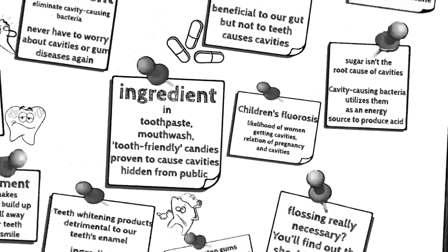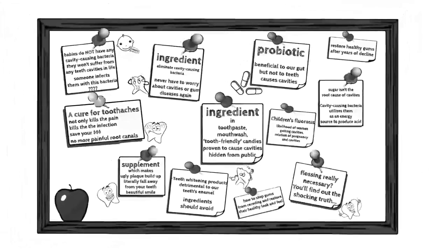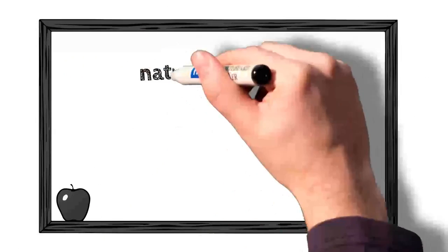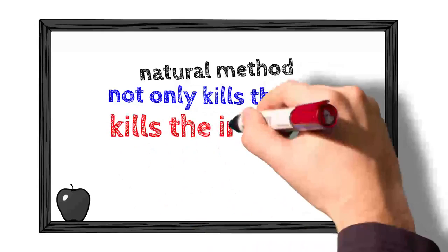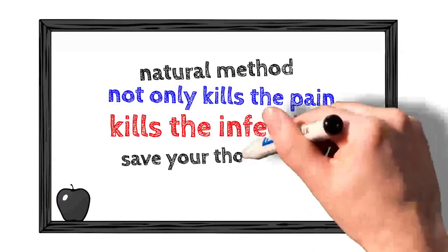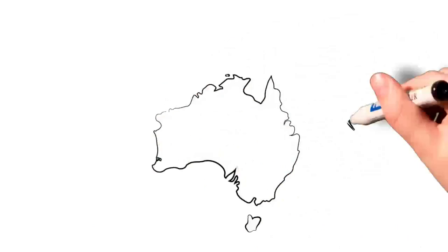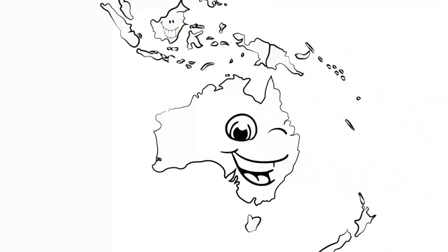Children's fluorosis, the likelihood of women getting cavities, the relationship of pregnancy and cavities, and many other facts exposed. And, of course, the simple regimen that can cure and prevent cavities forever. Maybe the best thing you'll discover is how to get rid of toothaches, a safe, natural method that not only kills the pain, but also the infection. This alone will save you thousands in dental bills. People in the South Pacific have been using this remedy for thousands of years, which is why they also have beautiful teeth.